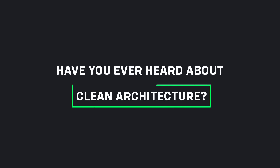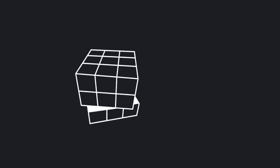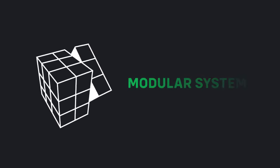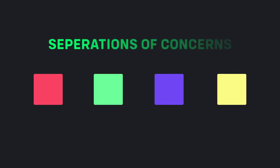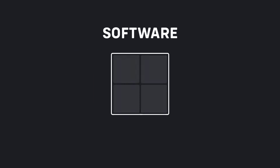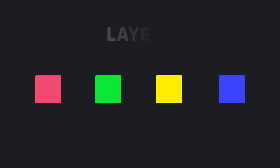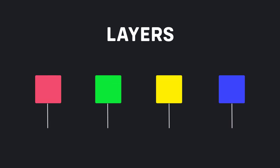Have you ever heard about clean architecture? Clean architecture is the blueprint for a modular system which strictly follows the design principle called separation of concerns. This style of architecture focuses on dividing software into layers to simplify the development and maintenance of the system itself.